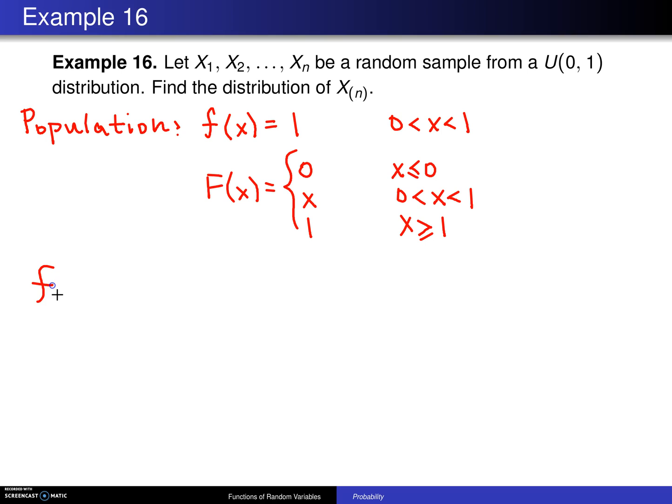Using the result from a few slides ago, the probability density function of the maximum of n values turns out to be n times the cumulative distribution function evaluated at x sub n, that quantity raised to the n minus 1 power, times f of x sub n.